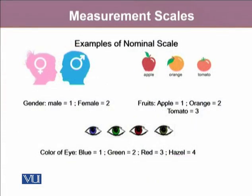For example, gender — we classify gender as male and female, which is a nominal variable where we assign number 1 for male and number 2 for female. 1 does not mean that males are inferior to females; 1 and 2 only represent the names, the categories. Similarly, for fruits: apple gets number 1, orange 2, and tomato 3. These assigned values simply represent the type of fruit, with no ranking criteria or order.